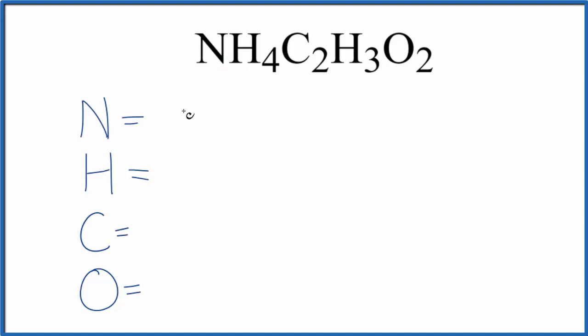Why don't we use the one on the top. So we have one nitrogen—the one's not written but it's there—so one nitrogen, four hydrogens, and then carbons we have two, and we have three more hydrogens. So let's add those in. That gives us seven total hydrogens and two oxygens.